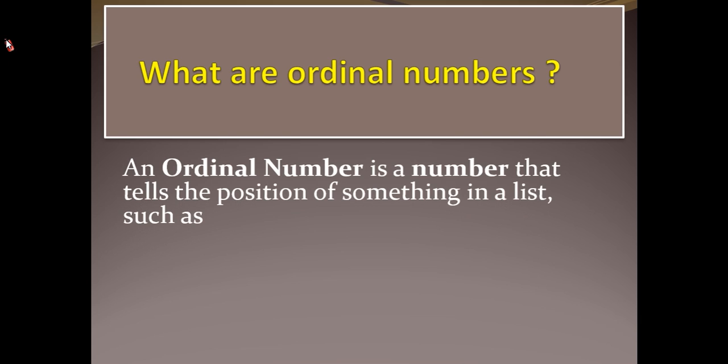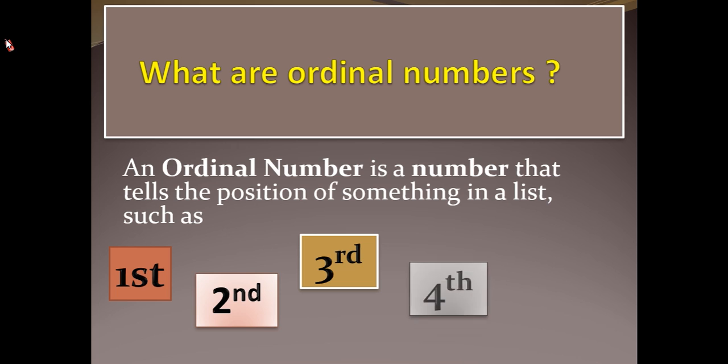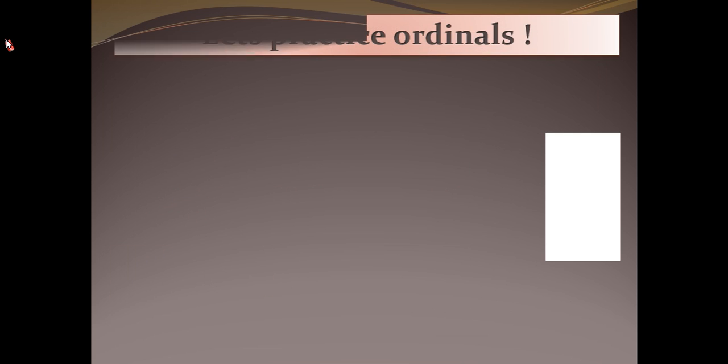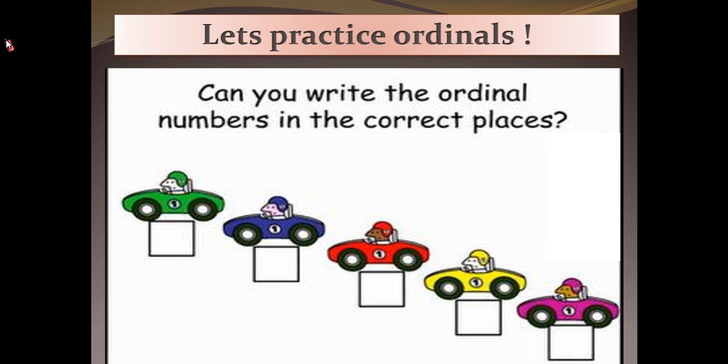What are ordinal numbers? An ordinal number is a number that tells the position of something in a list, such as first, second, third, fourth, fifth. Let's practice ordinals.